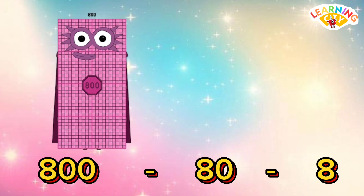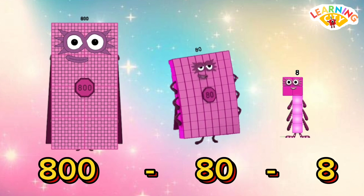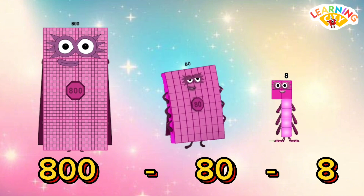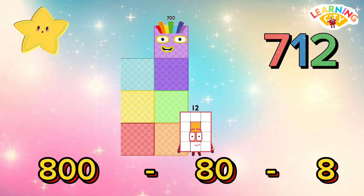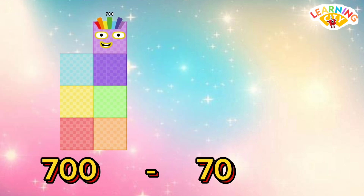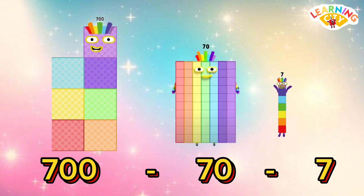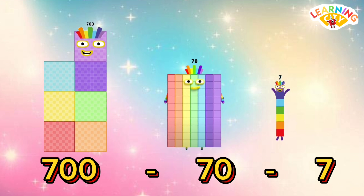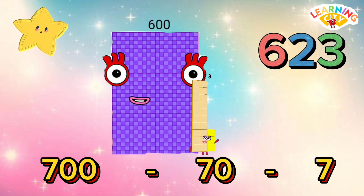800 minus 80 minus 8 is equals to 712. 700 minus 70 minus 7 is equals to 623.